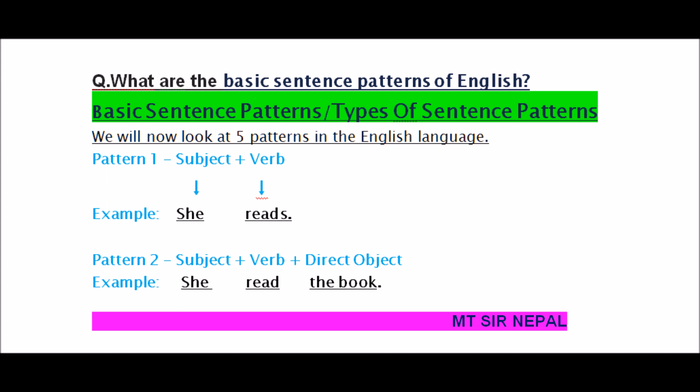Pattern 1 is the subject plus verb pattern. Example: 'She read.' Pattern 2 is subject, verb, direct object. Example: 'She read the book.' This is part of the pattern.